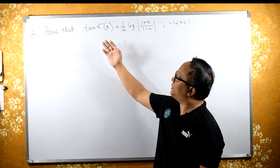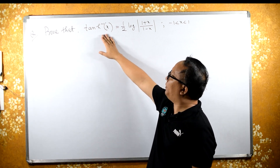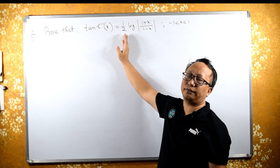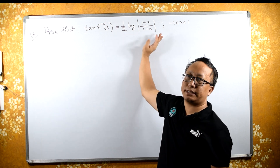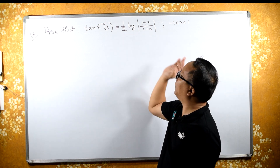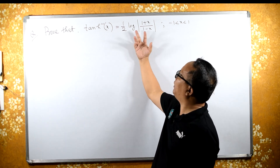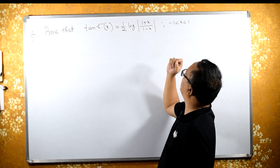The question is: prove that tanh⁻¹(x) equals half log of (1 plus x) upon (1 minus x), with the domain of x lying between minus 1 and 1.